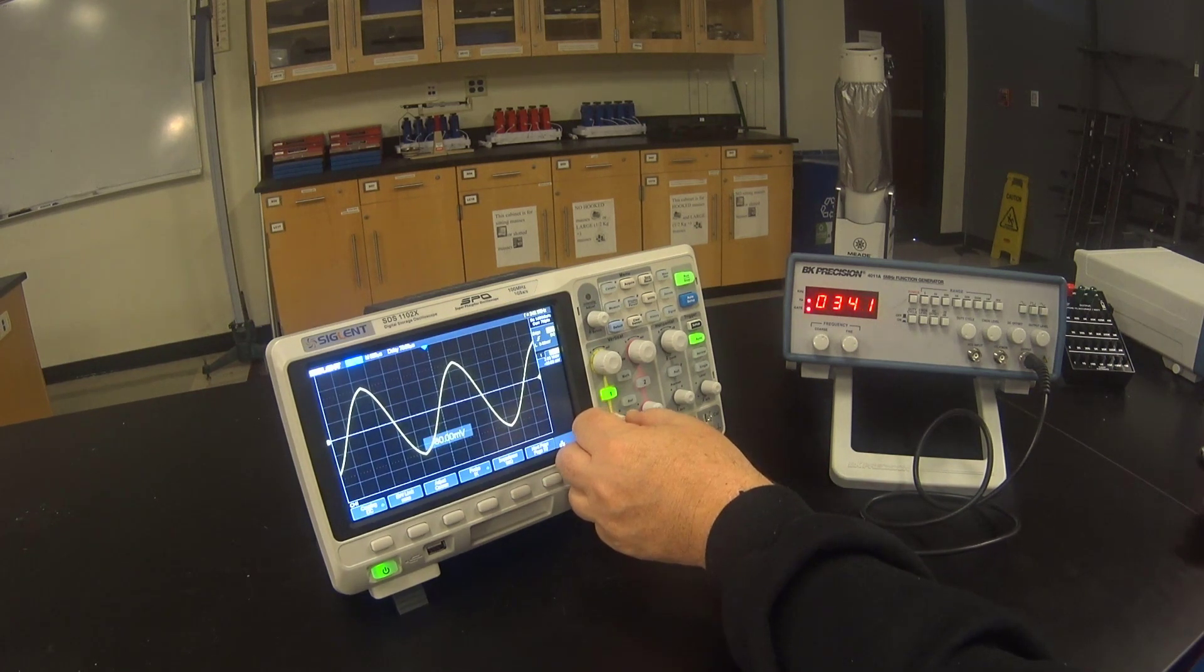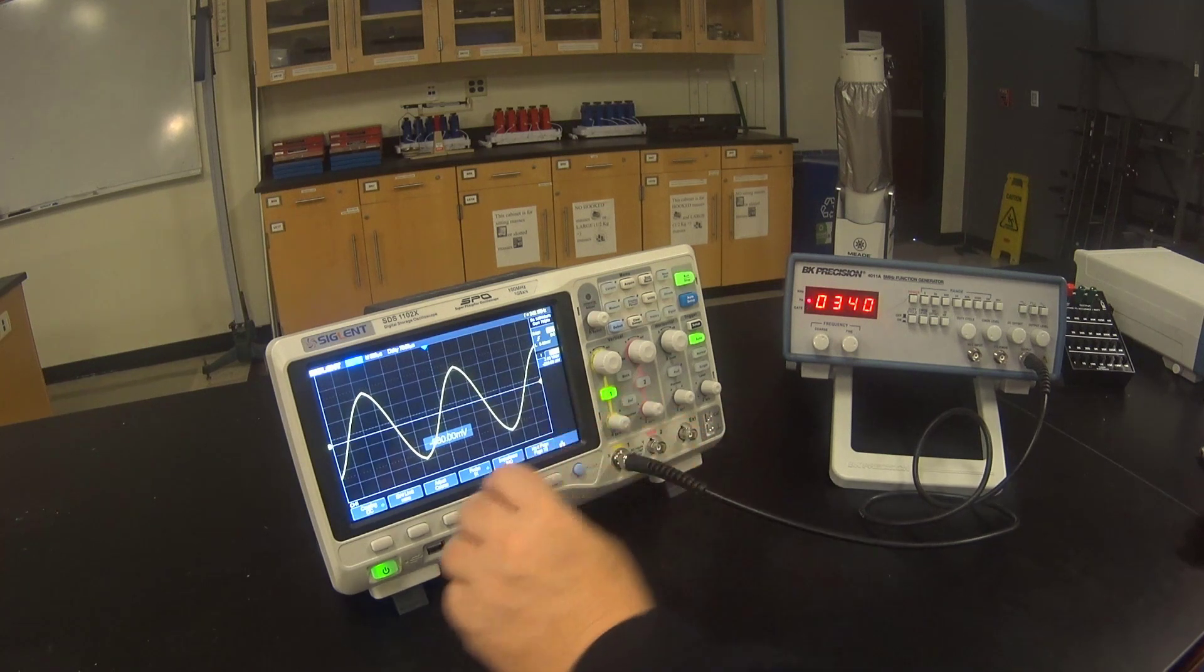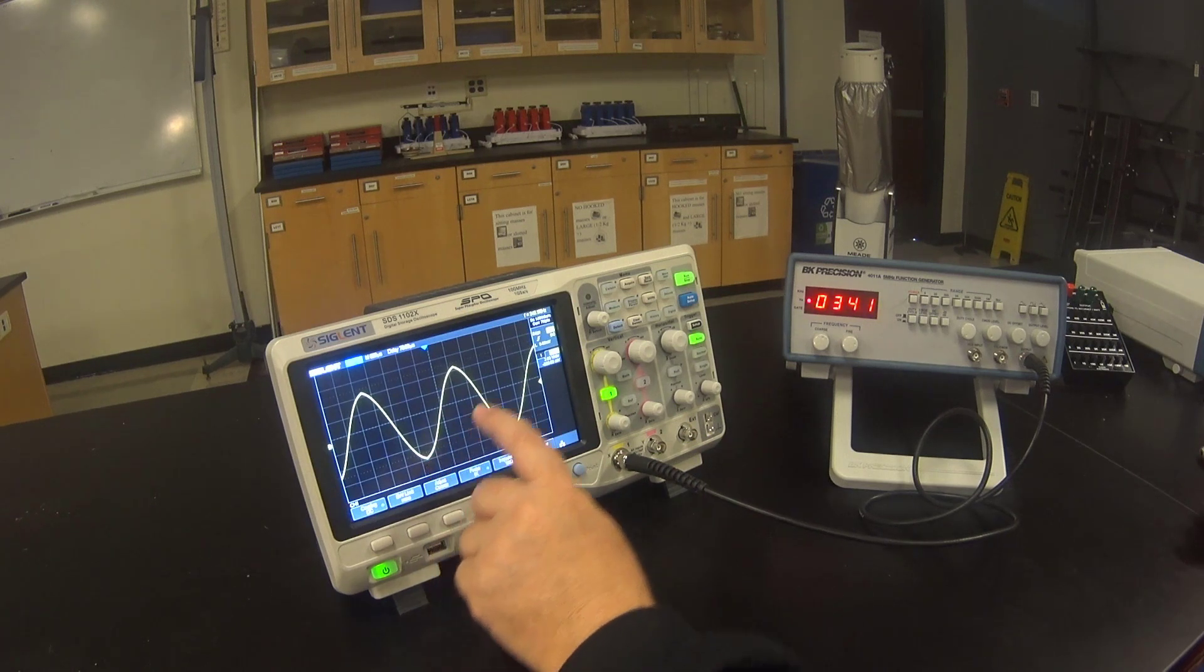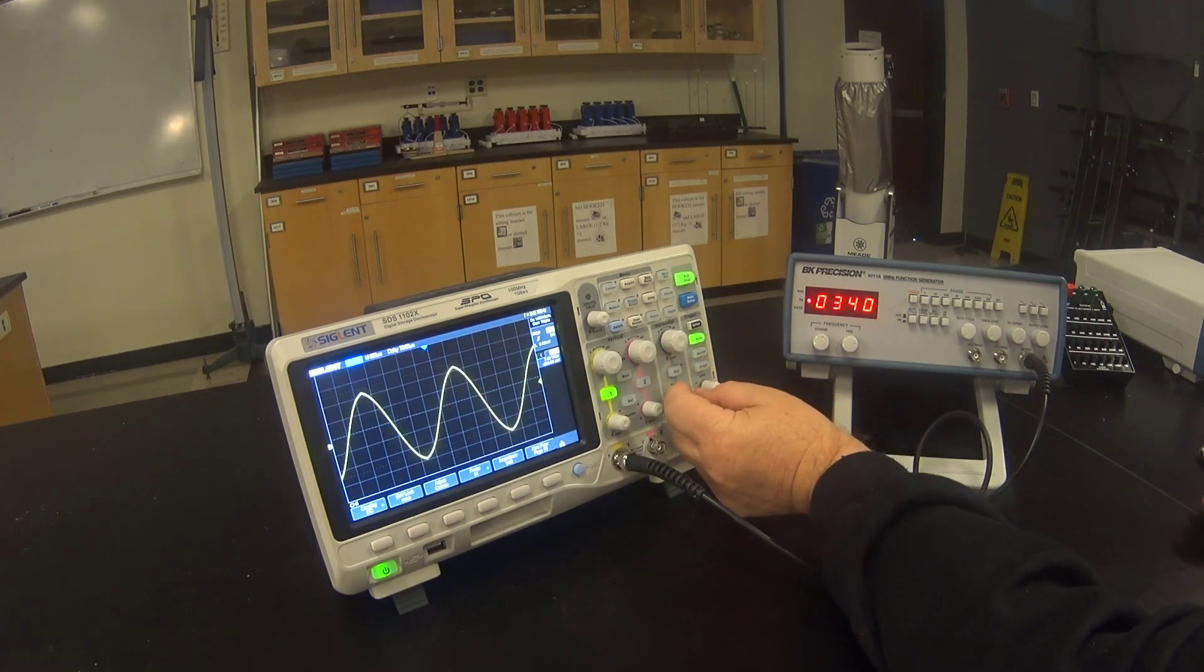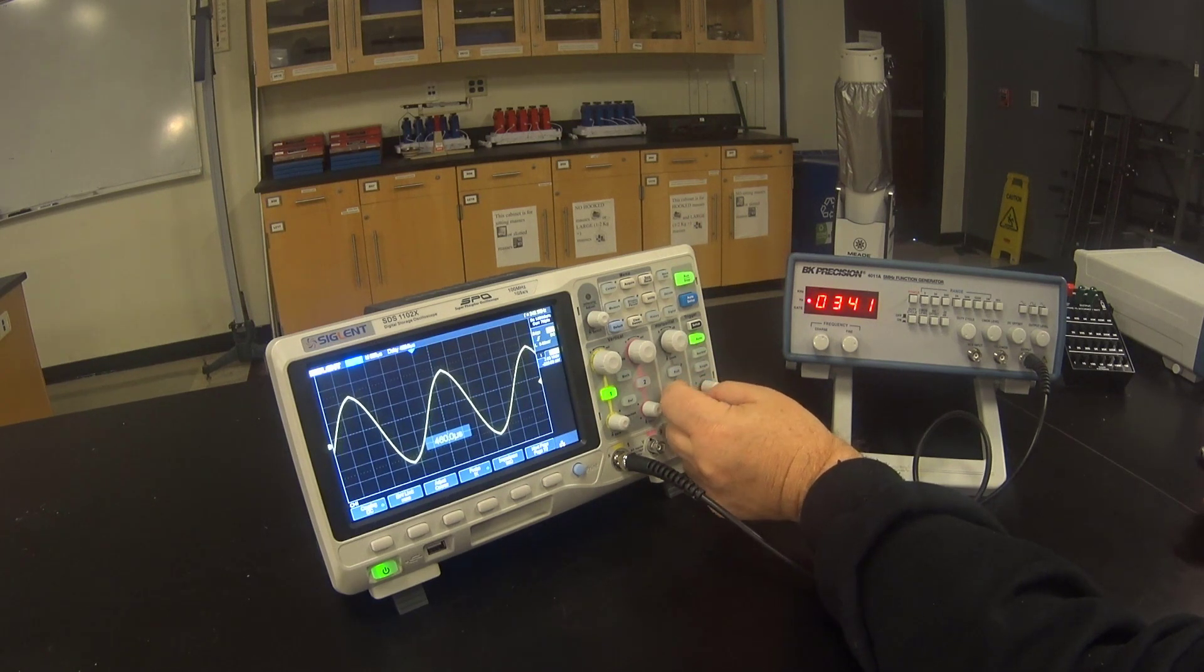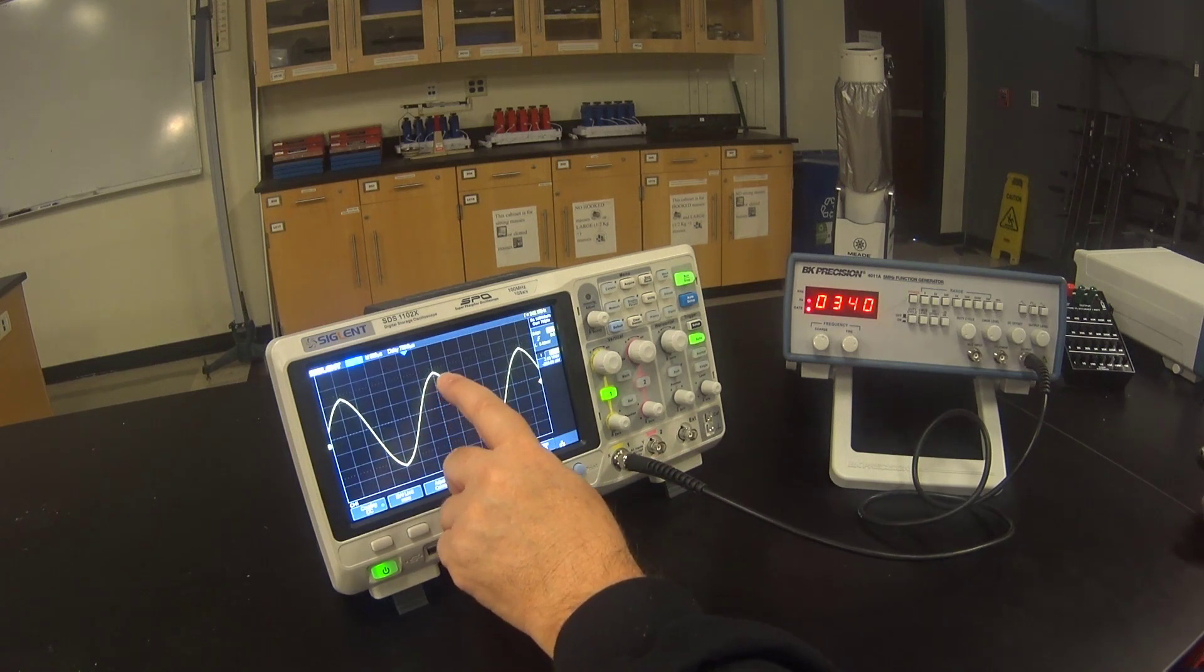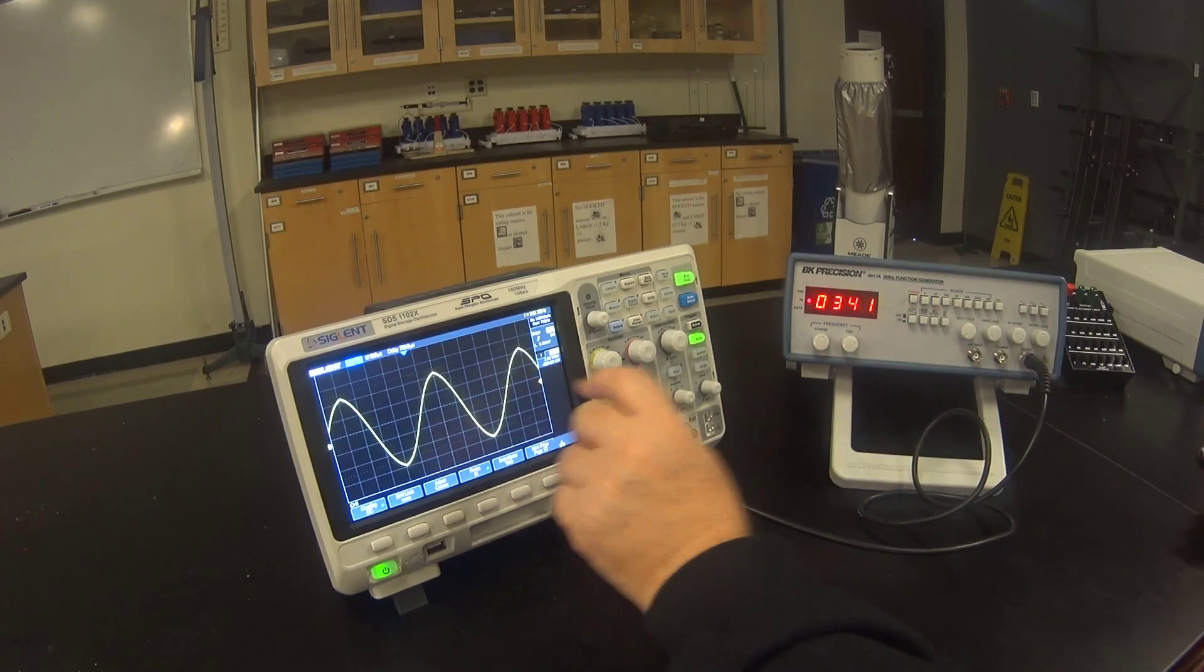To measure the peak to peak voltage, I adjust the ground so that the bottom of the signal touches a convenient line. I want to know how many divisions it is from the trough up here to the peak. It's helpful to move the peak to the center line where it's easy to read the markings. Then count the divisions from trough to peak. Finally, you multiply the number of divisions times the volts per division which can be found right there.